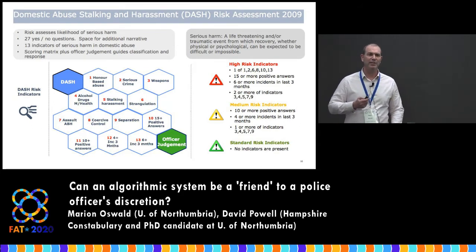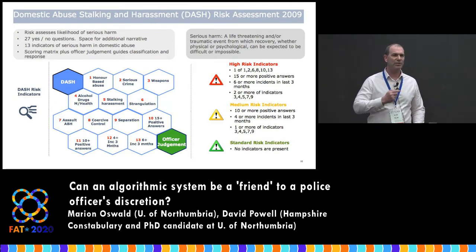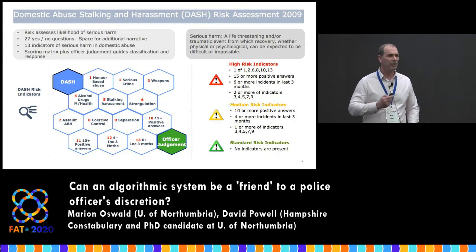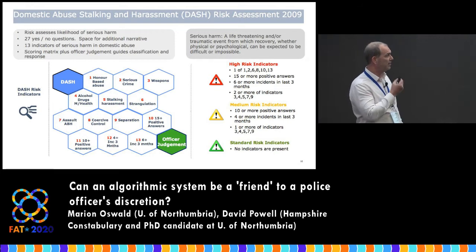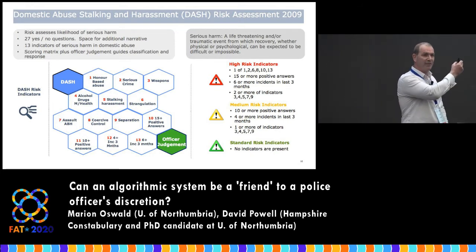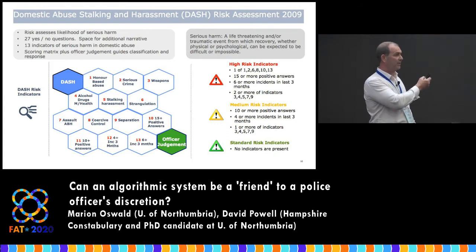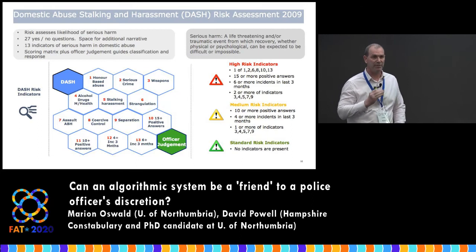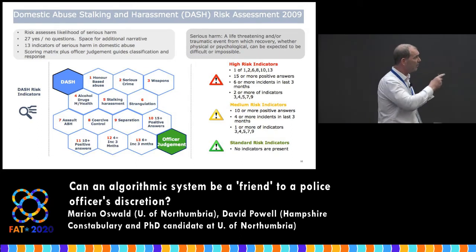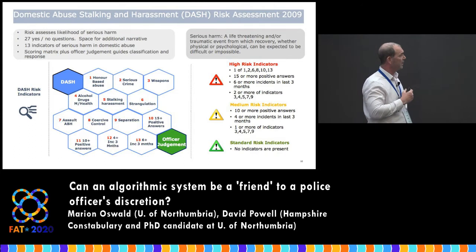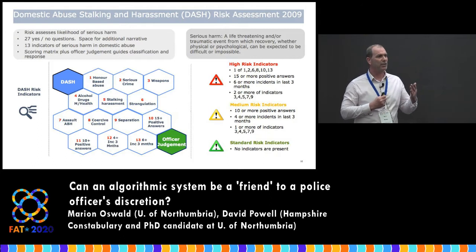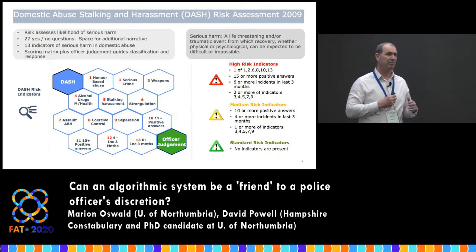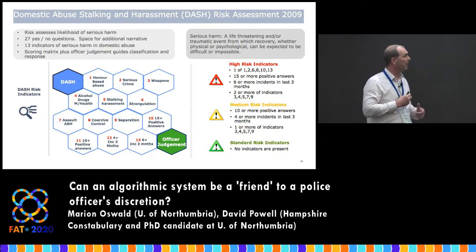In practice, high risk means very serious harm is likely; medium is less serious but risk exists; and standard risk means a pretty low chance of something happening at all. A police officer goes to a report from a victim with a 27-question yes/no questionnaire — with space for qualitative narrative — from which they identify 13 indicators of serious harm. These include factors that are worth considering in terms of how much is computable or reducible to code, and how much can realistically be drawn from someone in an emotional setting immediately after being assaulted.